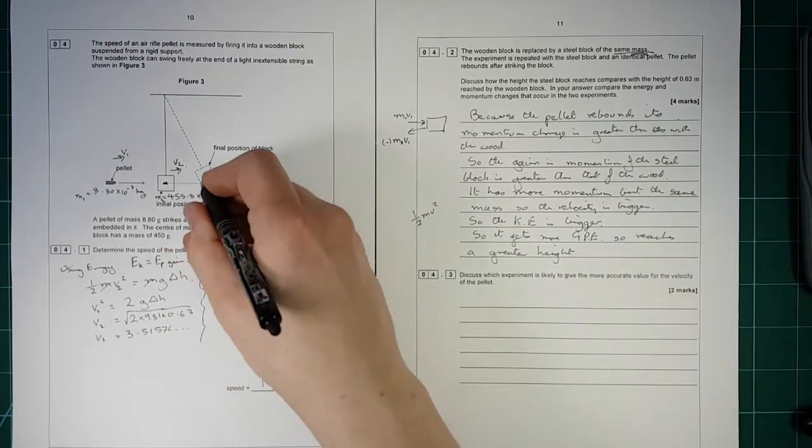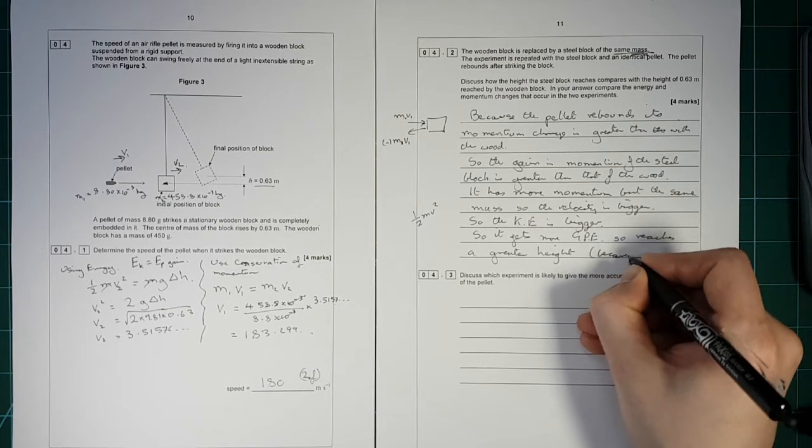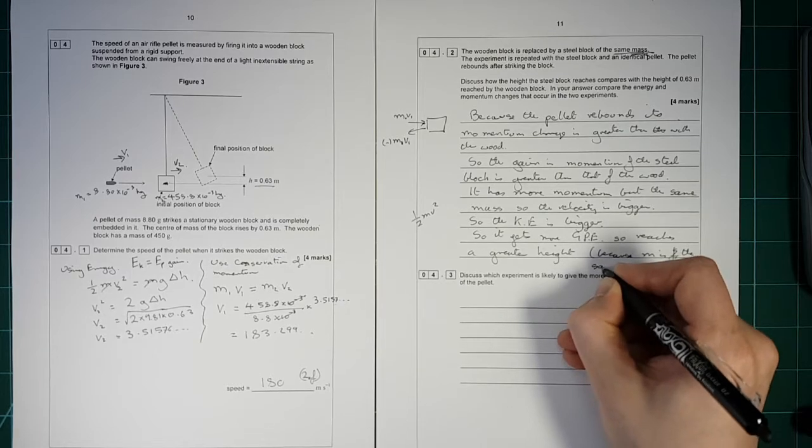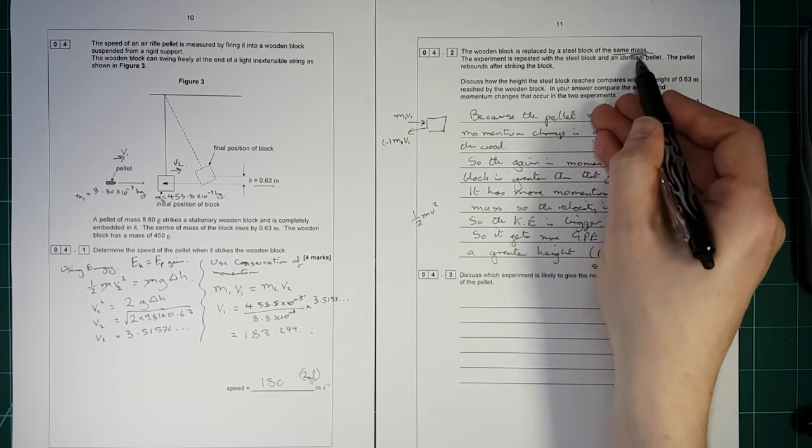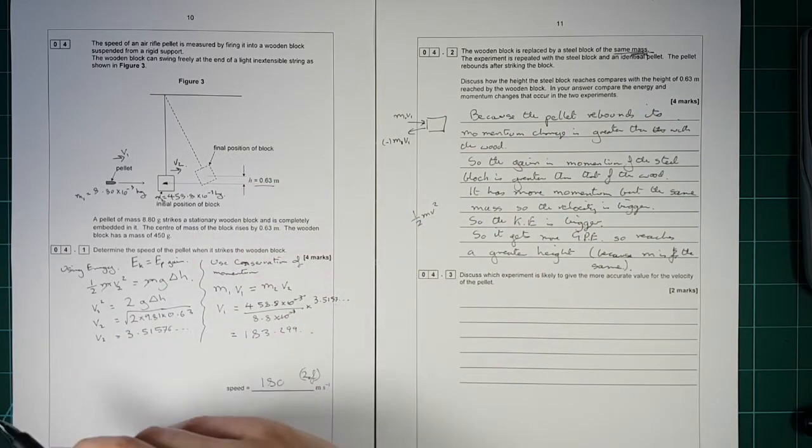And once again, we need the fact that the mass is constant for that to be true, because M is the same. So the mass is constant between same mass there and there. So if it's got more energy here, it will get to a bigger height.